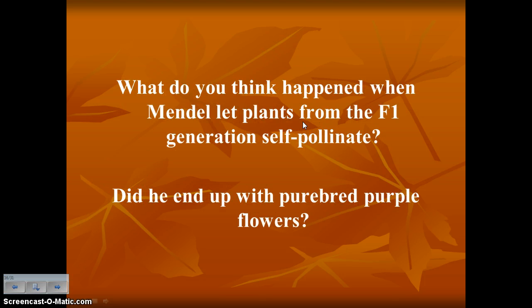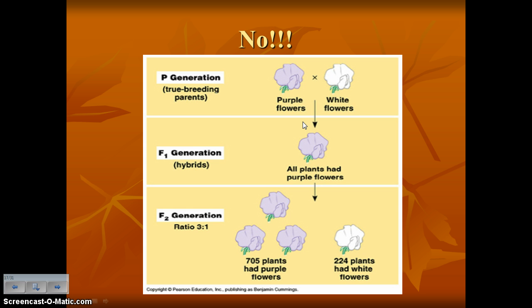Then Mendel asked: what happens if I let those F1 generation plants self-pollinate? He probably expected all purple flowers again, since he was crossing purple with purple. But what he saw was about 75% purple flowers and about 25% white flowers — a ratio of 3 to 1. So in the F2 generation, 75% expressed the dominant trait and 25% expressed the recessive trait.